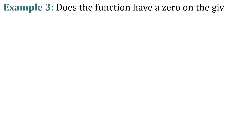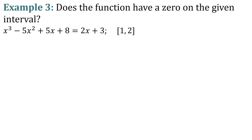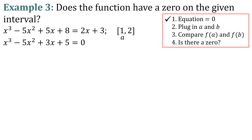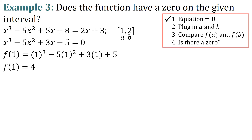Let's look at an example: does the function have a zero on the given interval? The function is x cubed minus 5x squared plus 5x plus 8 equals 2x plus 3, on the interval [1, 2]. First, our equation must equal zero, so we subtract 2x and 3 from both sides to get x cubed minus 5x squared plus 3x plus 5 equals 0. Now plug in a equals 1: f of 1 equals 1 cubed minus 5 times 1 squared plus 3 times 1 plus 5, which simplifies to 4.